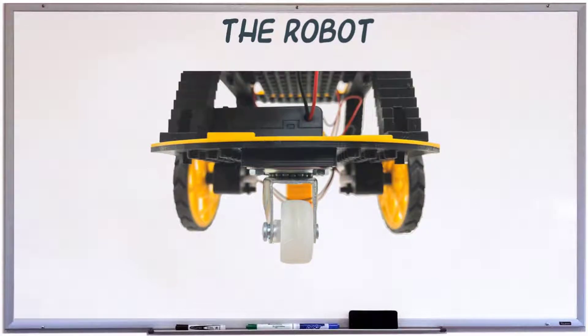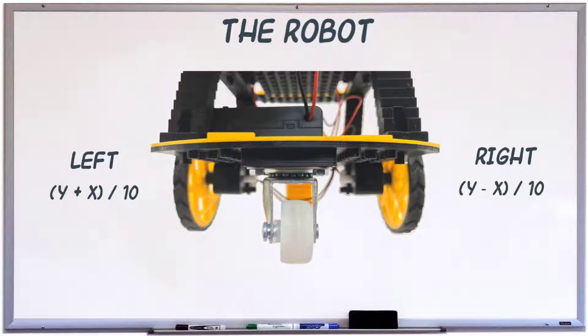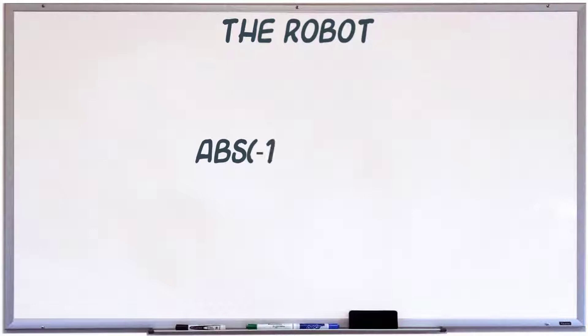To determine the speed of the wheels, we're going to use two formulas. For the left wheel, it's y plus x divided by 10 and for the right, it's y minus x divided by 10. If we're moving in reverse, we'll drop the minus sign using the absolute function.